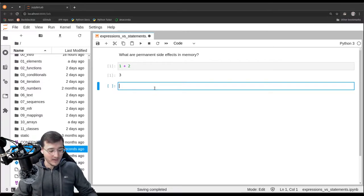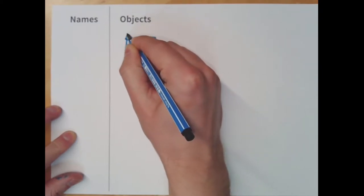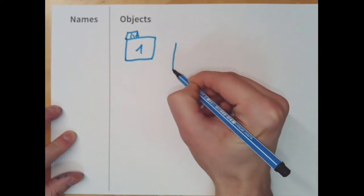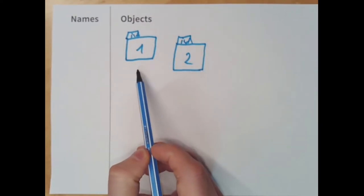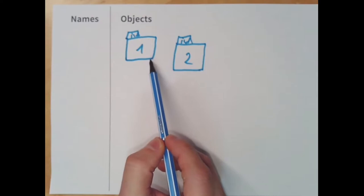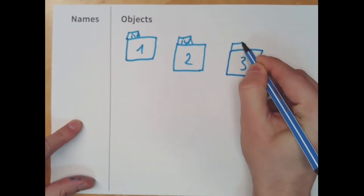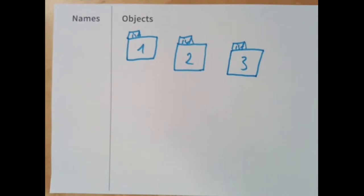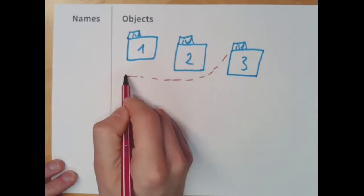Now let's see in a memory diagram what is going on here. What the expression does is it first creates an integer object with the number 1, and it also creates an integer object with the number 2. Then Python asks the left operand: do you know how to handle the right operand for addition? The left one says yes, and they add themselves together, giving us a new integer object with the number 3. A reference to this object is given back to us — let's indicate it with a red dotted line.